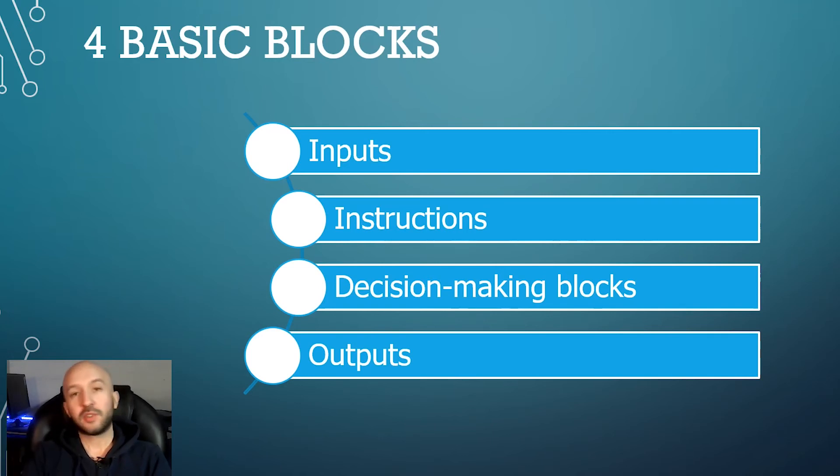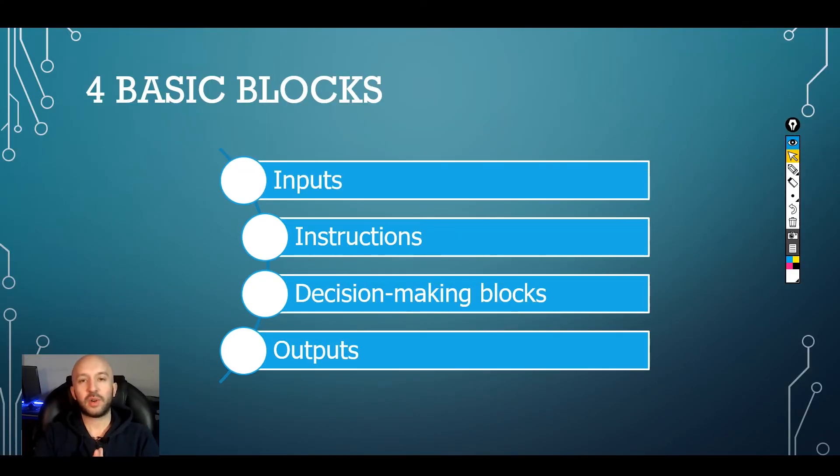And then we have decision-making blocks. Decision-making blocks are like when you are walking and you have a path that divides and you have to make a decision whether you go right or left. Imagine that. That is a decision-making block. It's an if. If this condition happens, I'm going to do one thing and if not, I'm going to do the other thing or take one path or take the other.